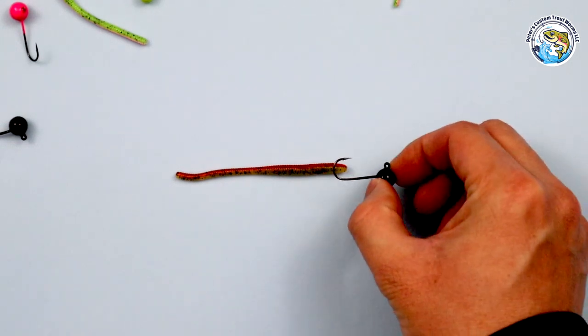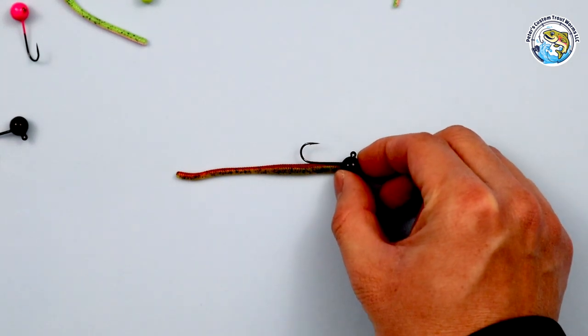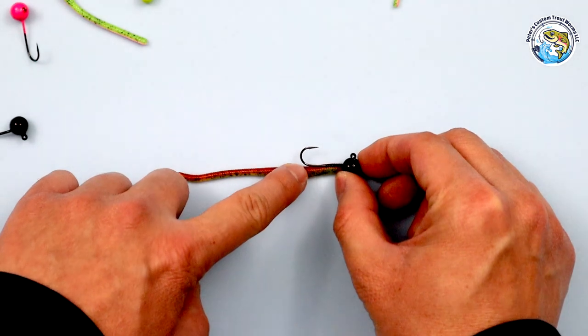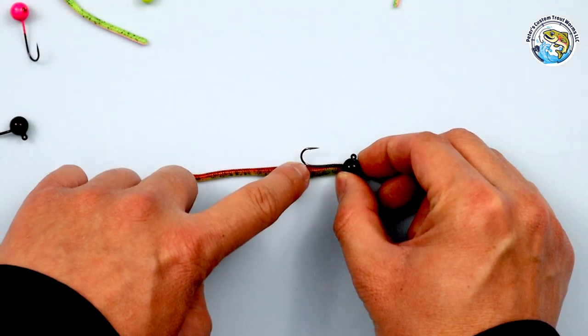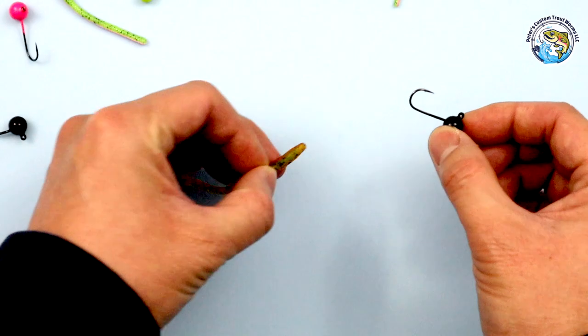What you want to do is take your hook and put it up against the bait so now you know where that hook point should come out. It's right about there, so just keep your eye on that.